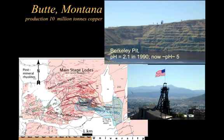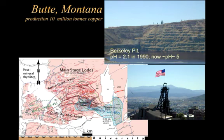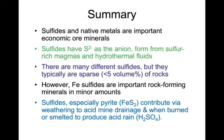As an example, here's the Berkeley pit in Butte, Montana, shown in the center of the map on the lower left. The pit was abandoned in the 1980s, and by 1990 the water had risen and the pH had dropped to 2.1 due to pyrite weathering. A flock of Canada geese landed on the lake and were killed by the acidic conditions. Gradually, as the water has risen, more rock containing feldspar has buffered the pH, and now it's about pH 5. Acid mine drainage is treated this way — by buffering with feldspars or calcite.